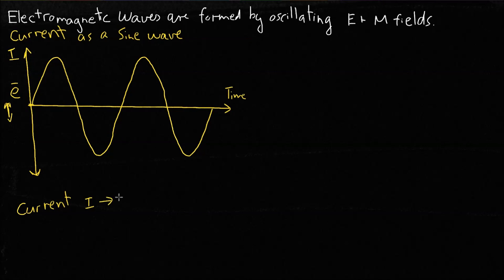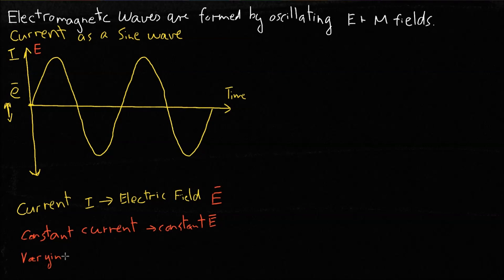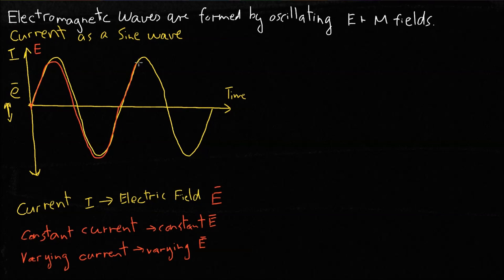Our current i induces an electric field. As the electrons move, the excess of electrons in some areas produces an electric field just like static electricity. We call that electric field E — we put a little line over it because that's a vector field, or a field of vectors. We know that constant current causes a constant electric field, and a varying current will cause a varying electric field around our wire. Let's draw our electric field strength on top of our current strength with respect to time — those will be closely matched because the electric field is generated from the motion of the electrons. These lines show the strength of the electric field at each point.